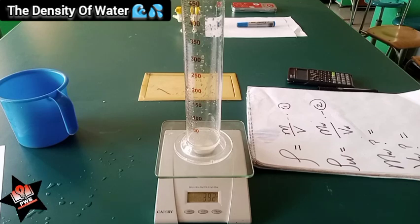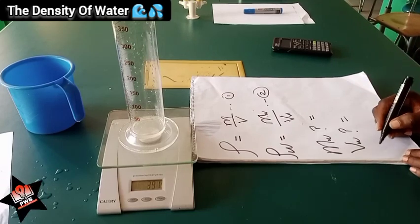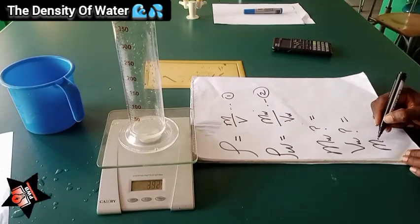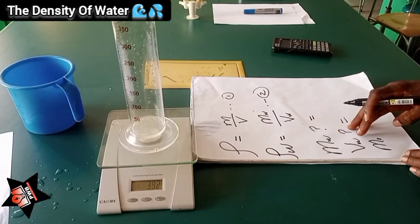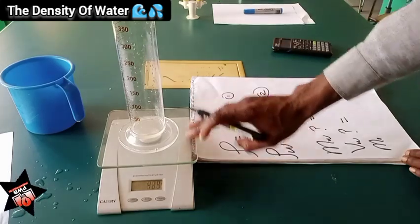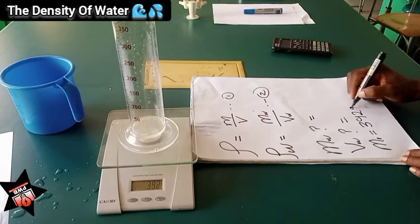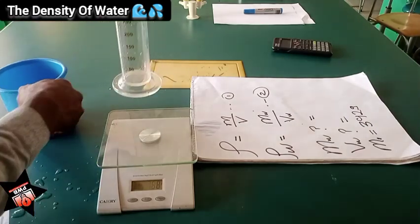I'm going to take the camera close so we can see the reading. The reading is 392.0 grams. We denote this as m1 — m1 represents the mass of the empty cylinder placed on the weighing balance. So we write m1 equals 392 grams.